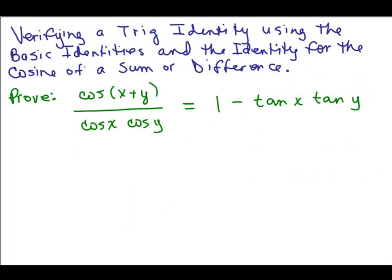All right, we're going to verify a trig identity using the basic identities and the identity for the cosine of a sum or difference. So here's our problem: cosine of X plus Y over cosine X cosine Y equals 1 minus tangent X times tangent Y.